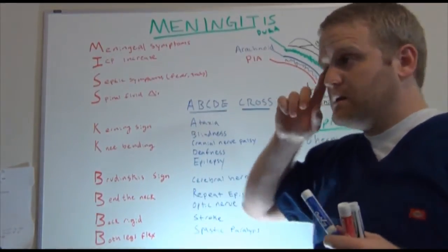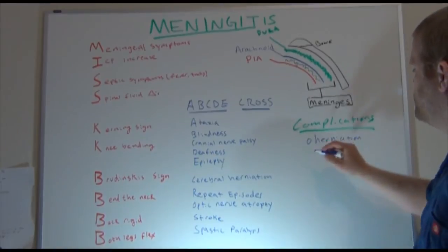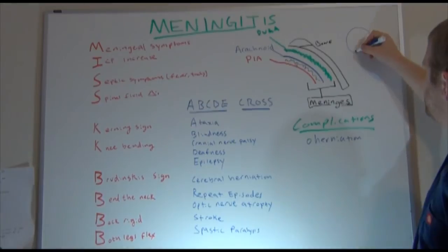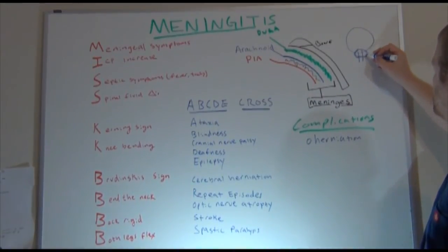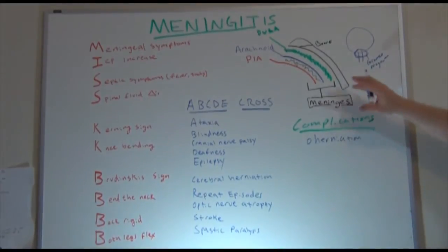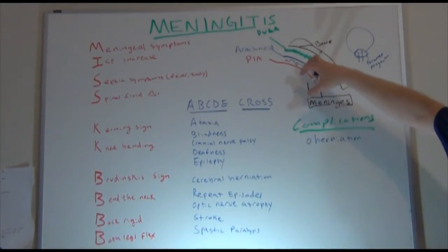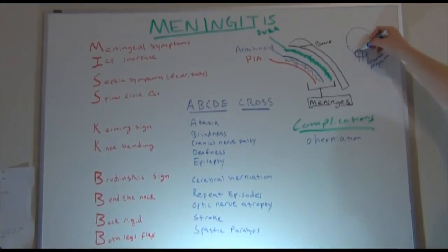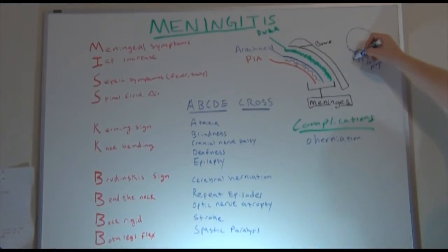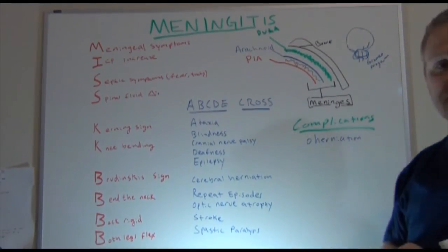At the base of our skull, where our brain stem comes out, we have this big hole called the foramen magnum. As these meninges swell and swell, the brain can only take up so much more space — it's a very tight area. What can happen is the brain tissue can actually push out of this hole, and if that happens, that can actually lead to brain death.